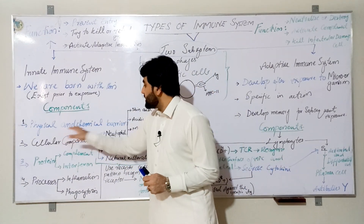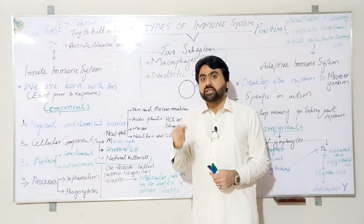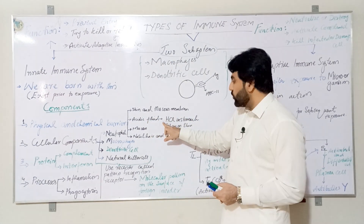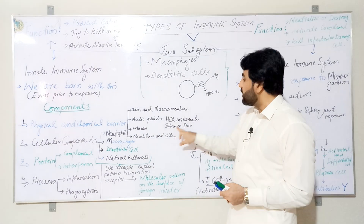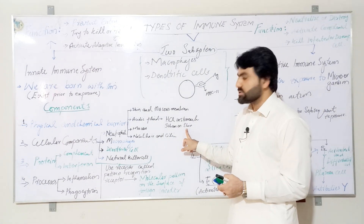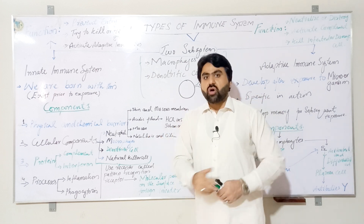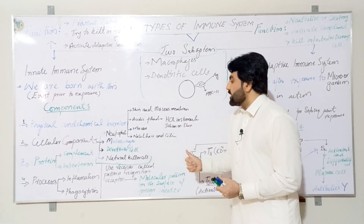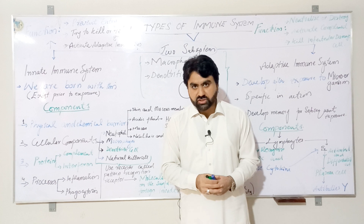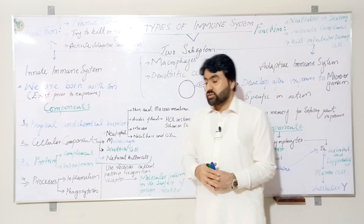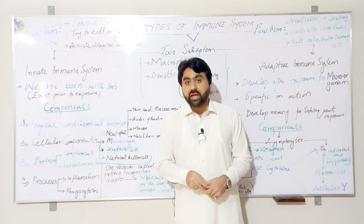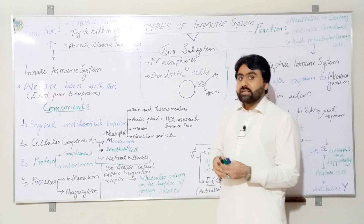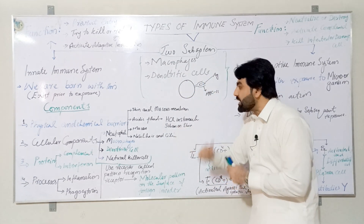The first component — physical and chemical barriers of the innate immune system — includes skin and mucous membranes, acidic fluids like HCl in the stomach, sebum fluid present on the skin secreted by the sebaceous gland, mucus present on the lining of the gastrointestinal tract produced by goblet cells, and hair and cilia present in the upper respiratory tract. All these components are present at birth.